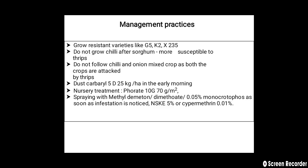Dust Carbaryl 5D at 25 kg per hectare in the early morning. Follow nursery treatment with Imidacloprid 70g per metre square. For chemical control, spray with methyl demeton or dimethoate 0.05 percent, or monocrotophos as soon as infestation is noticed. Also use neem seed kernel extract 5 percent or cypermethrin 0.01 percent.